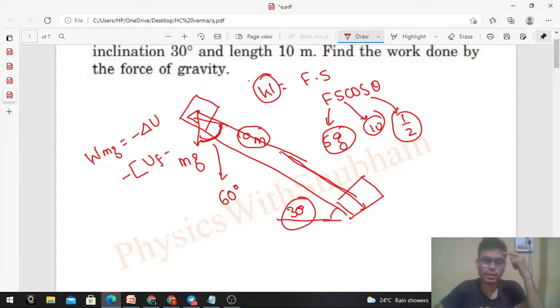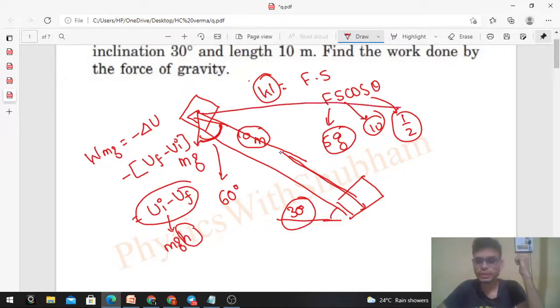And with the minus sign, mgh is the change in gravitational potential energy. h is the height difference between initial and final position. See, this will be your h - the vertical height, that is your h.